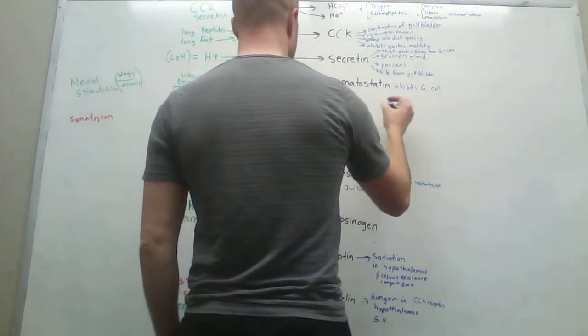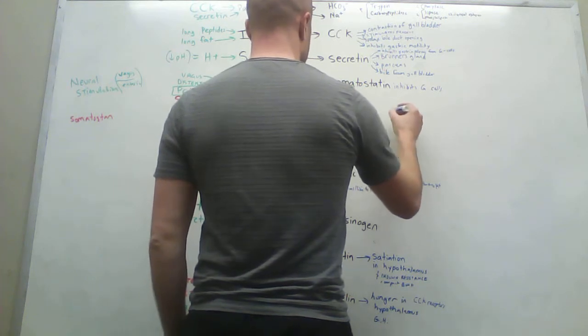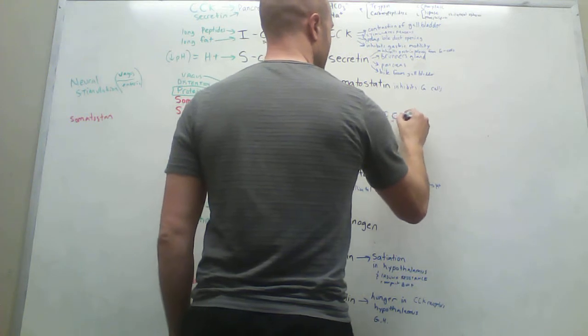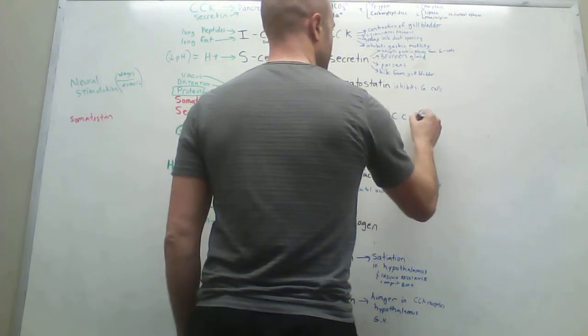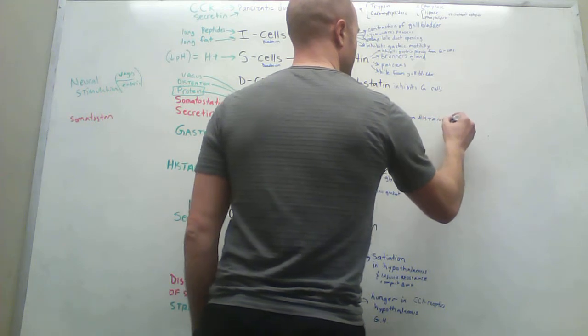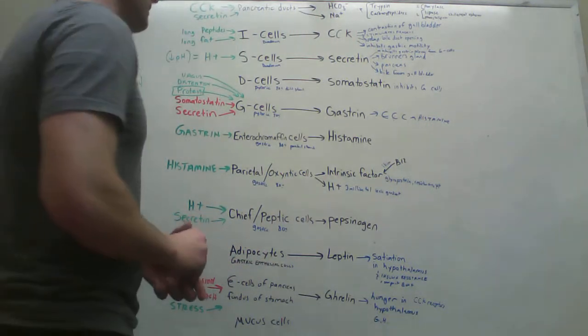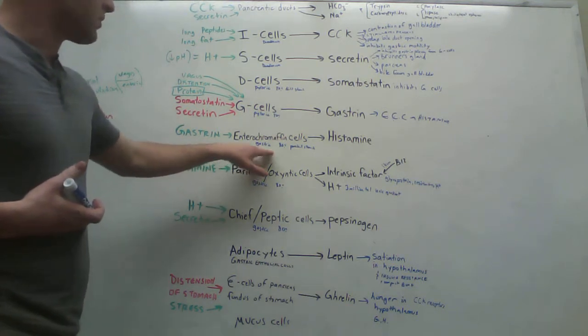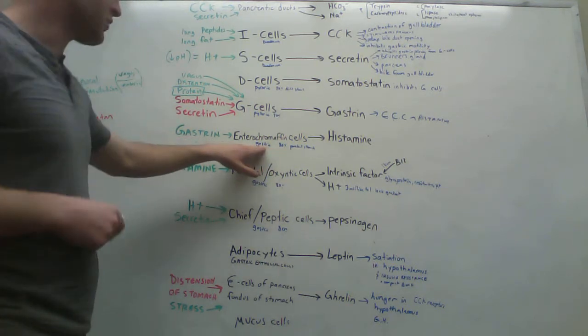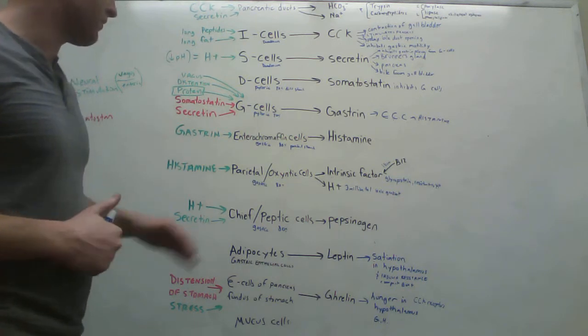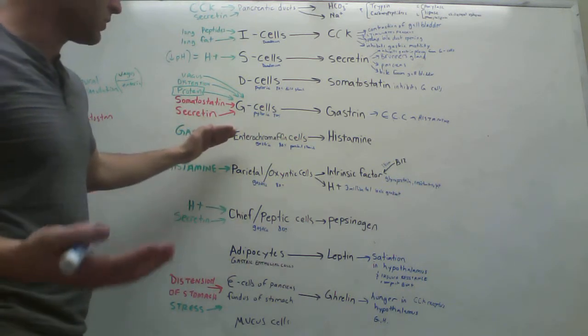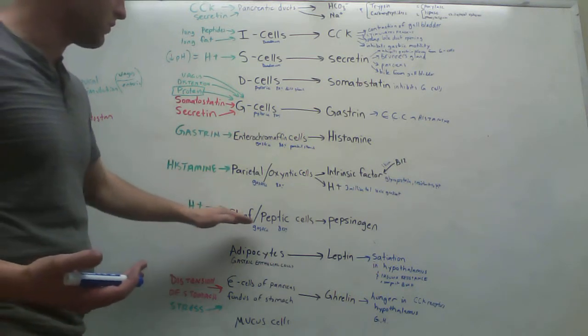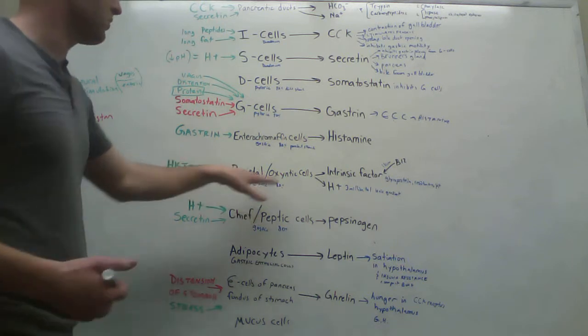Gastrin, I should probably write it on here, triggers enterochromaffin, I'm just going to do it. Enterochromaffin cells to release histamine. So that's what starts this big cascade. So here it is. Now we're going to the proximal 80% of the stomach. In the gastric glands, we have three different types of, actually four, because mucus as well. But enterochromaffin cells, parietal or oxyntic cells, chief or peptic cells. Same thing, two names.